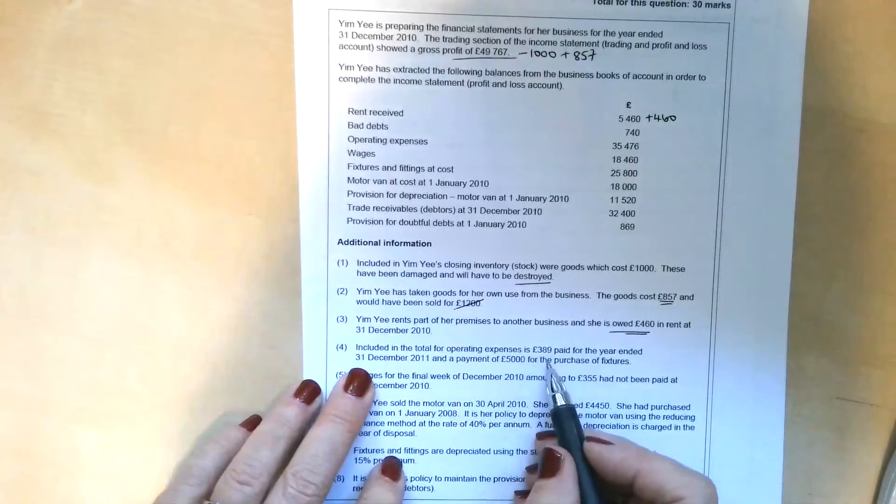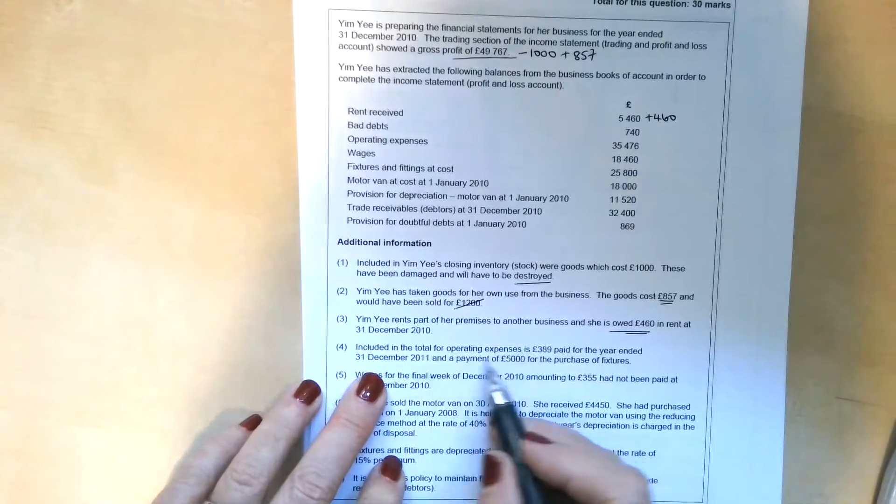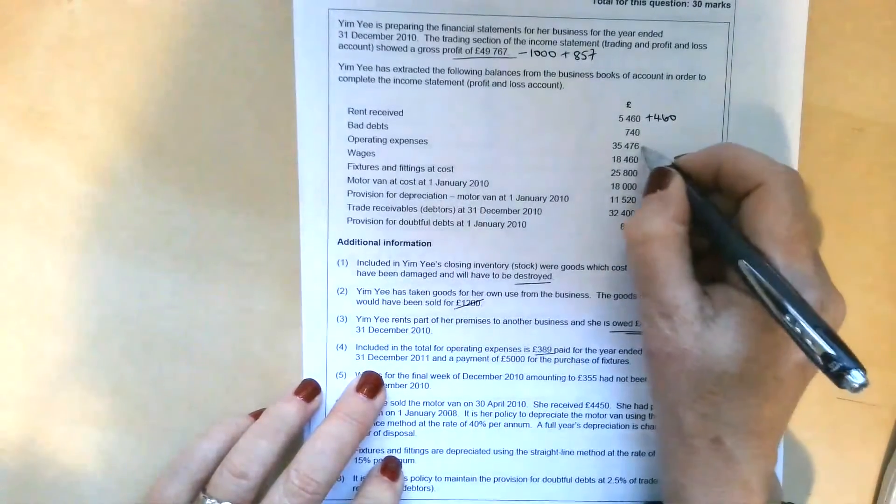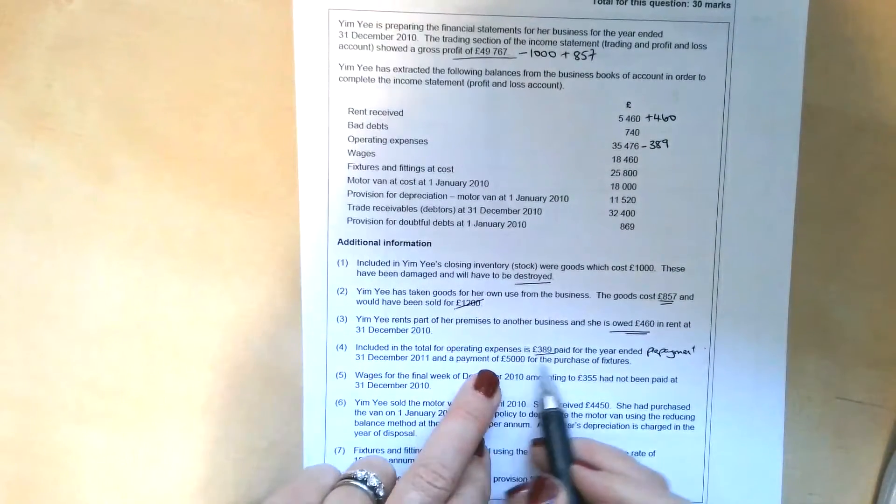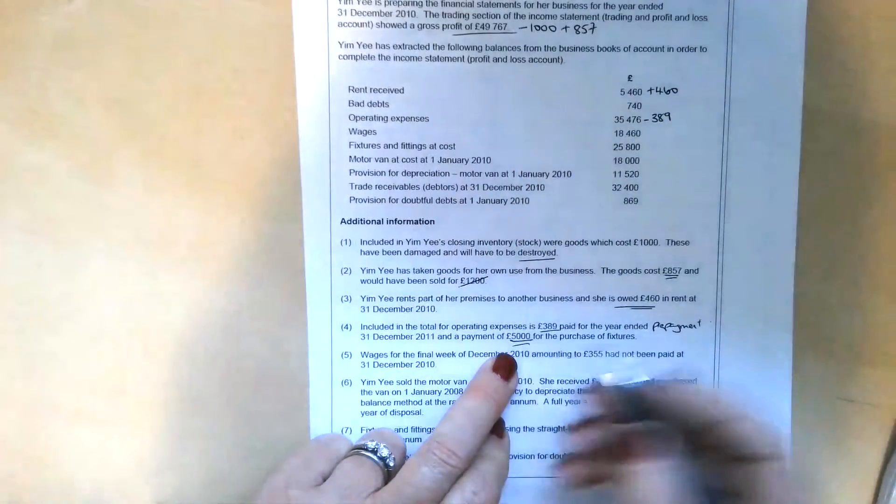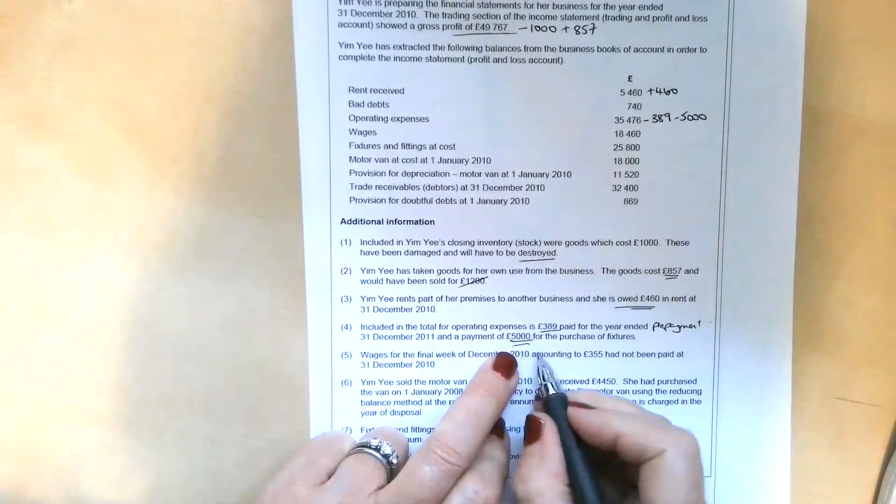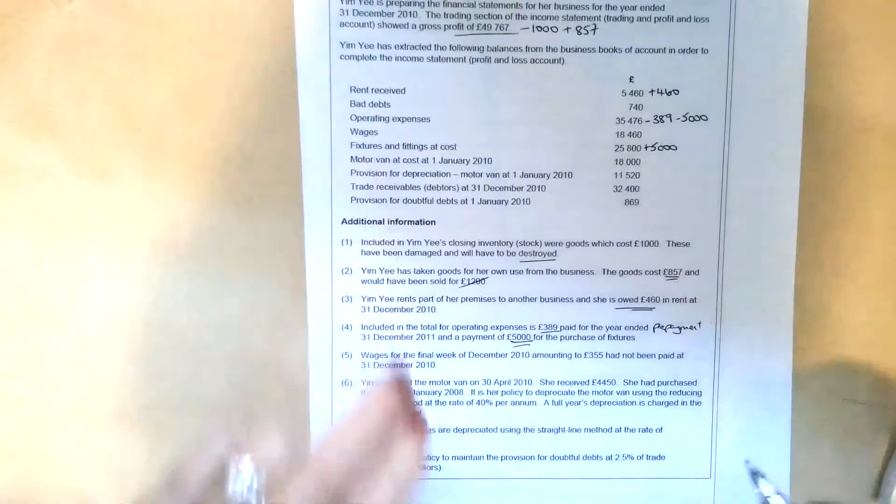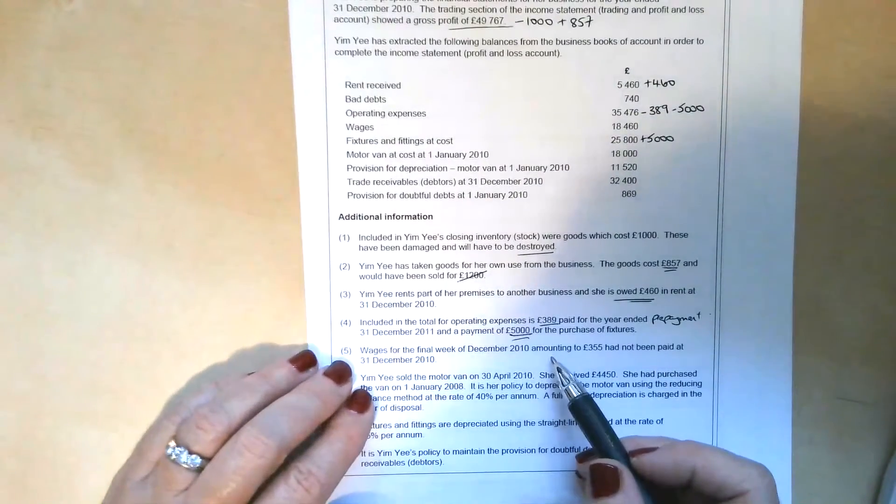Included in the total for operating expenses is £389 paid for the year ended 31st of December 2011. So that £389 is a prepayment. We're going to need to deduct that from operating expenses. And we've also got £5,000 paid for the purchase of fixtures. Well, that's obviously an error of principle that's occurred here. It's a non-current asset, so it shouldn't be in operating expenses. We need to take £5,000 out of operating expenses, but what we need to remember to do is add it to the fixtures and fittings at cost, because that's going to increase the value of those when we come to work out depreciation.